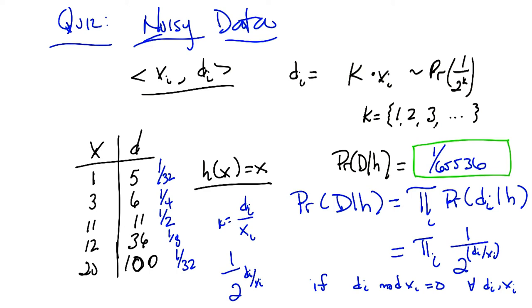Right. So they all have to be divisible, otherwise all bets are off. Okay, so in other words, if d of i mod x of i is equal to 0, then this formula holds, and it's 0 otherwise. Exactly.